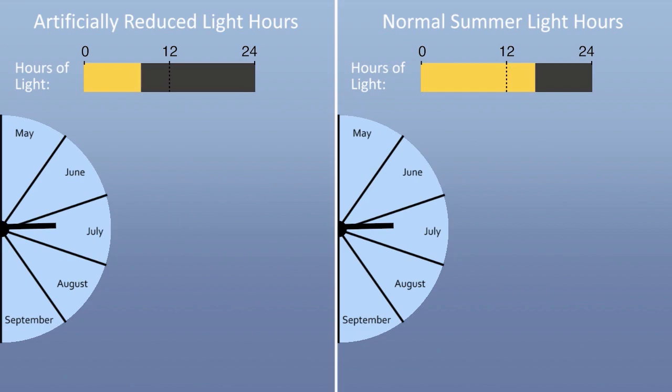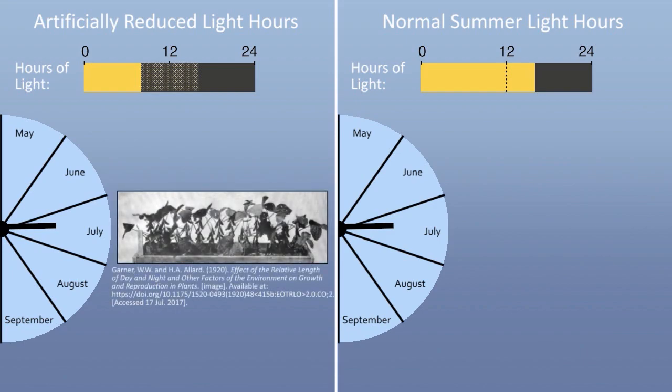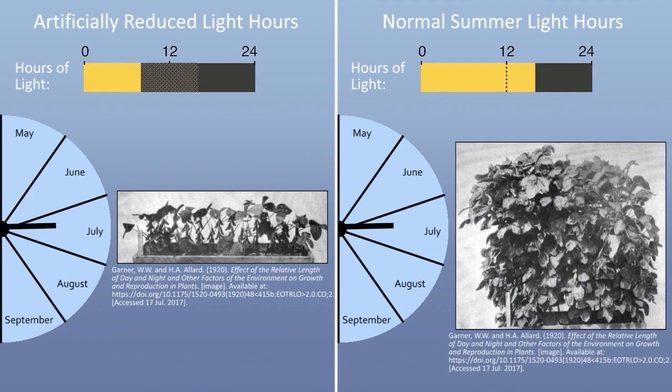And indeed, by artificially reducing the light hours to mimic a short winter day length, Biloxi soybeans will flower and produce fruits without delay. While conversely, plants kept growing under normal summer light conditions will keep growing until it's finally time to flower.